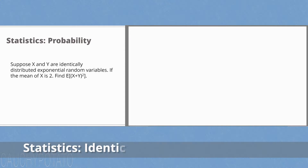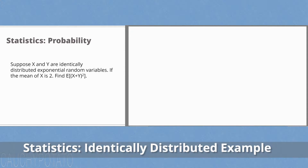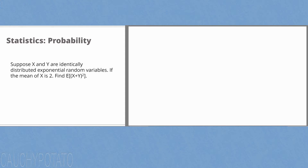Hey internet, for this video I'm going to solve a probability statistics problem. Suppose x and y are identically distributed exponential random variables. If the mean of x is 2, find the expected value of x plus y squared.